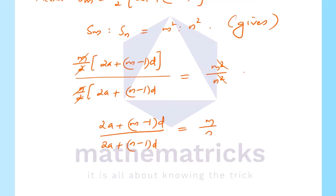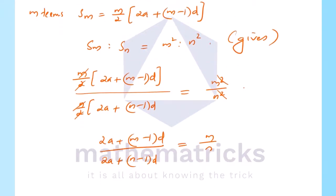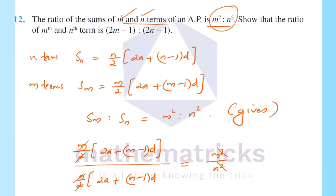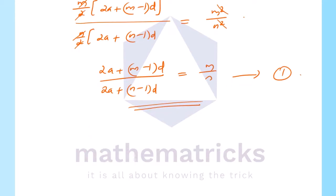Now we can simplify it. Let's see how we use this equation. Now let's prove what we have to do — show that the ratio of the mth term to the nth term equals 2m minus 1 to 2n minus 1.